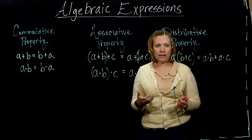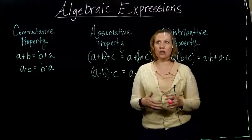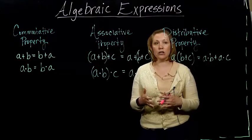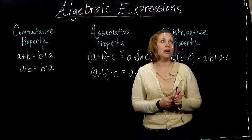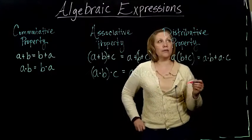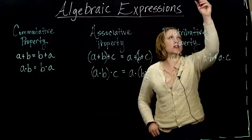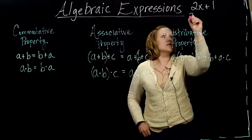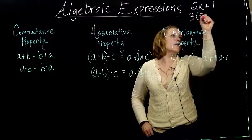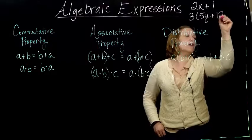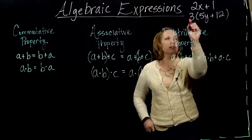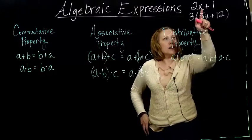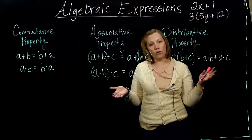Well, what is an algebraic expression? An algebraic expression is just a mix of numbers and variables along with operations. So a couple of examples of algebraic expressions might be something like 2x plus 1 or 3 times 5y plus 12. So we've got multiplication and addition mixed in here along with some variables and the variables actually just stand for real numbers.